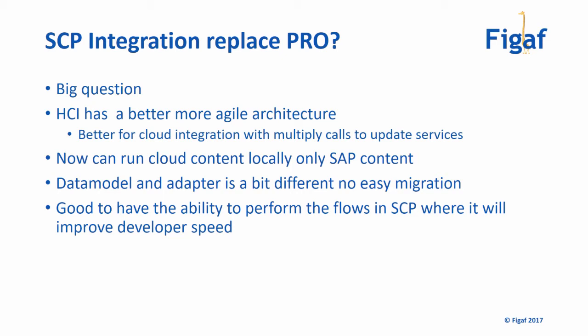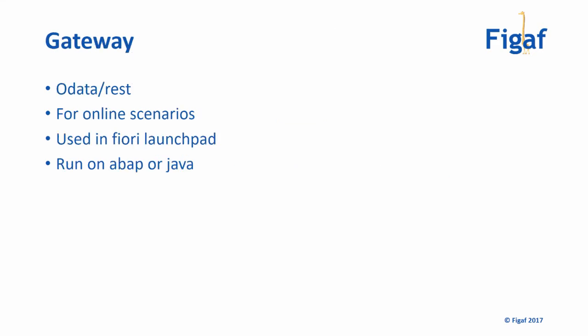SAP Cloud Platform Integration is probably the fastest tool if you want to do some of these integrations. Another tool I discussed with the client was Gateway, because they had a portal where customer suppliers were logging in and getting data. It's relevant to expose data using Gateway, where you can create OData REST services that people can use. You probably already have it in your landscape because you're already using or will have to use Fiori Launchpad, and it runs on ABAP and on the PO system as well.